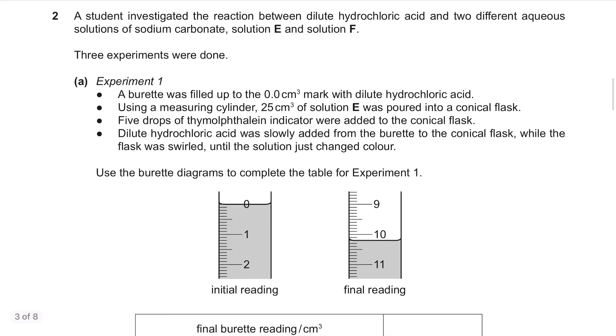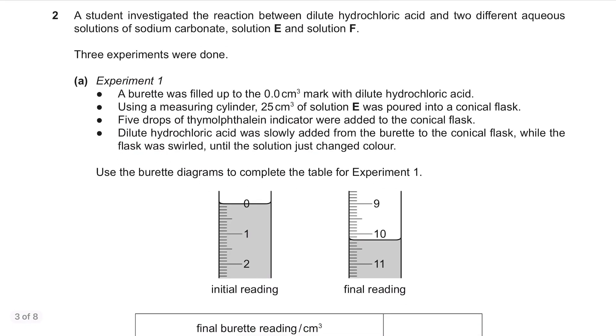Question 2. A student investigated the reaction between dilute hydrochloric acid and two different aqueous solutions of sodium carbonate, solution E and solution F. Three experiments were done. Part A. Experiment 1. A burette was filled up to the 0.0 cm³ mark with dilute hydrochloric acid. Using a measuring cylinder, 25 cm³ of solution E was poured into a conical flask. Five drops of thymolphthalein indicator were added to the conical flask.